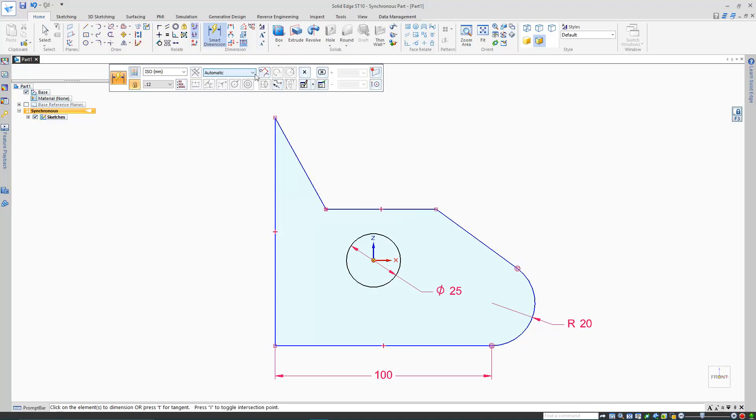If you need to place angular dimensions, you can either choose the angular dimension command, or start the smart dimension command, select two lines and press A.